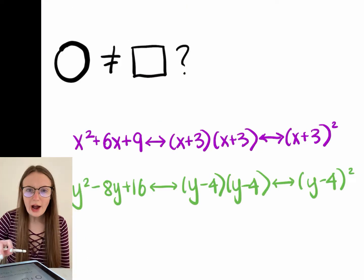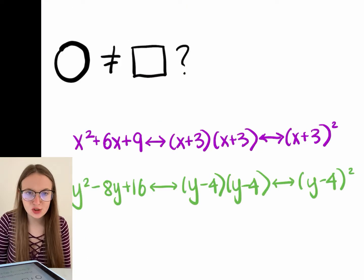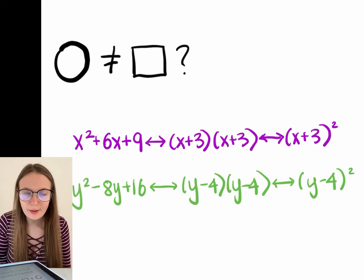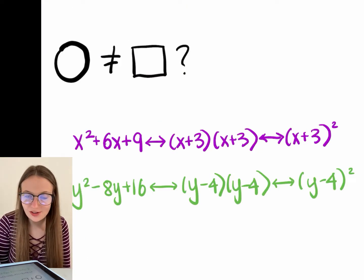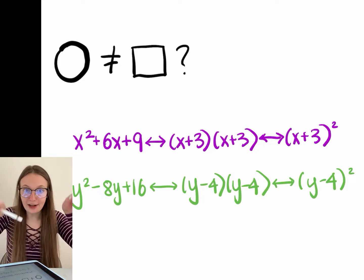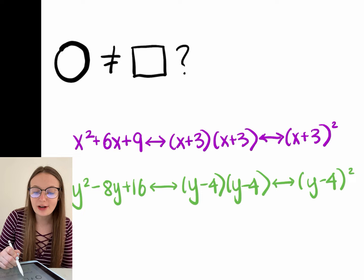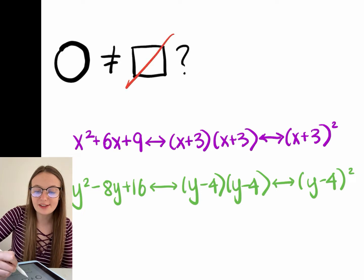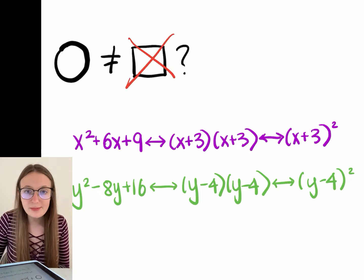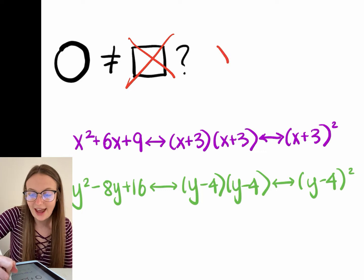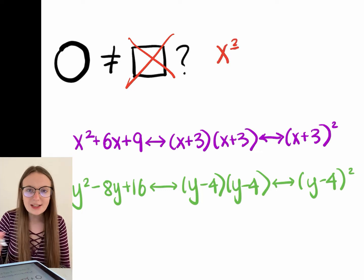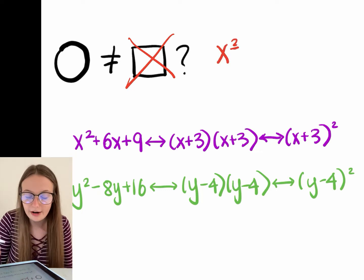Why are we talking about squares if this is about circles? This has nothing to do with a square as in the geometric shape. We're talking about the type of square we mean when talking about an exponent — like x squared. That's what we mean by square here.